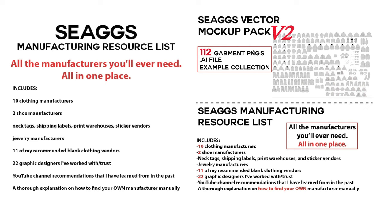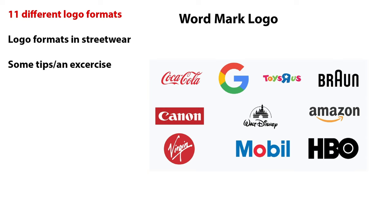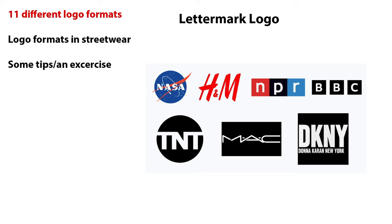Okay, back to the video. First: combination mark logo — it's a visual and a word in a composition together. Wordmark logo — made up of the brand name in stylized letters. Lettermark logo — it minimizes the length by using the initials of each word and creating a group.